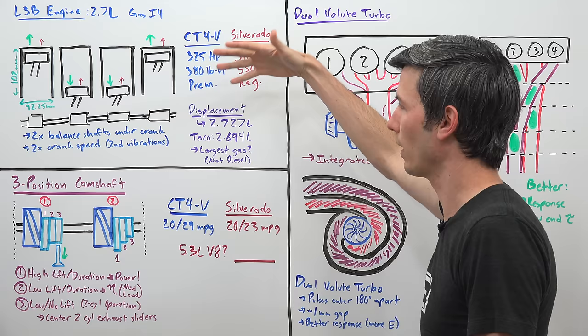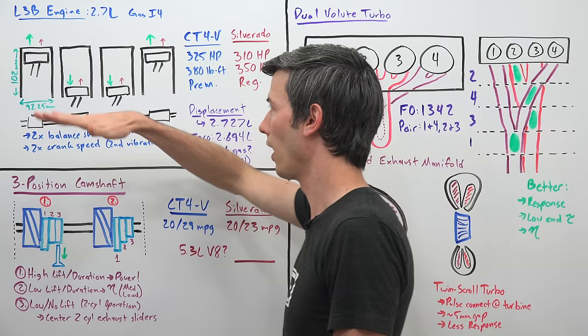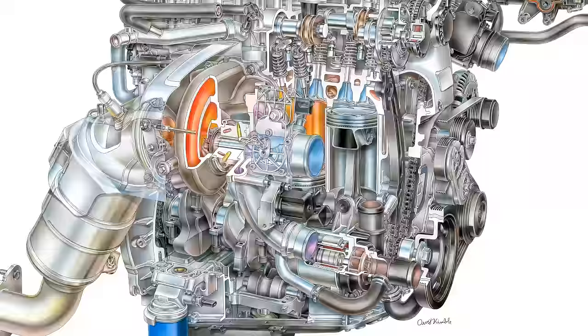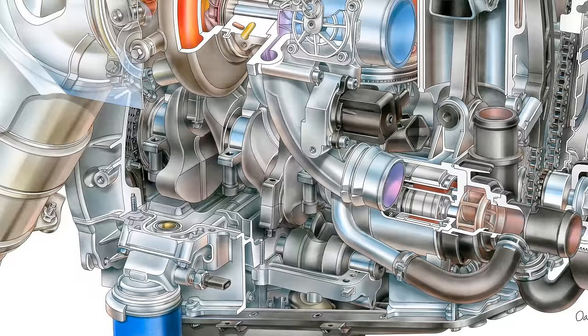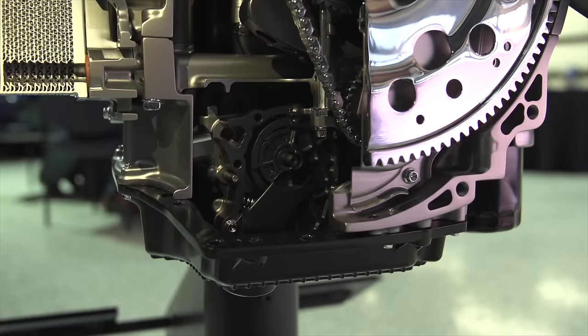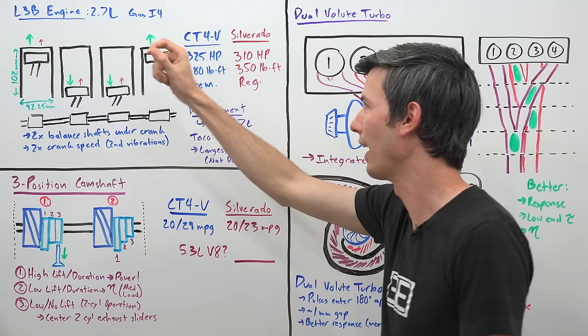So what GM does to combat this is they have two balance shafts underneath the crankshaft, above the oil pan below this engine. And so this is to combat secondary vibrations. If you want to learn more about how balance shafts work I have a video which I will link in the video description, but basically that eliminates the secondary forces that the pistons will be creating. So you will have two balance shafts located underneath that crankshaft and these are rotating at two times the speed as the crankshaft.